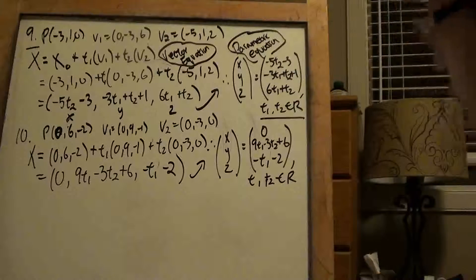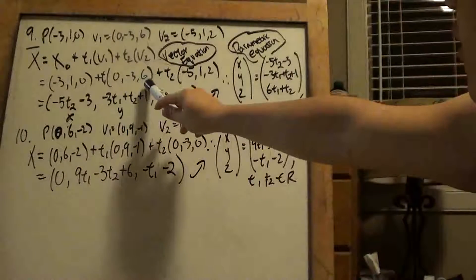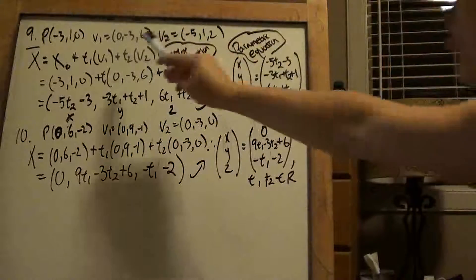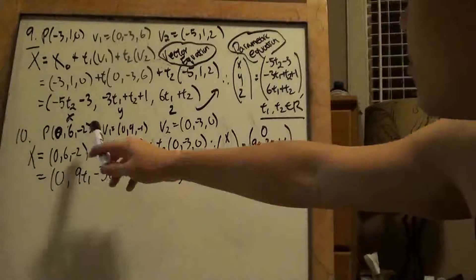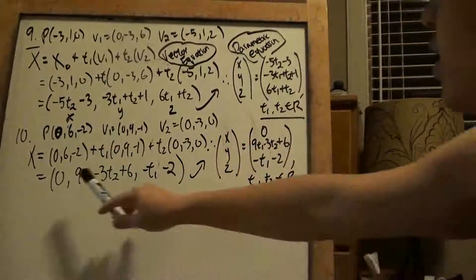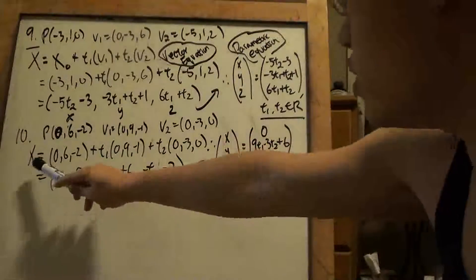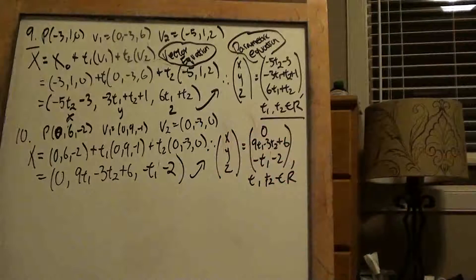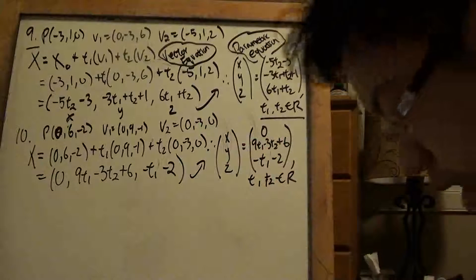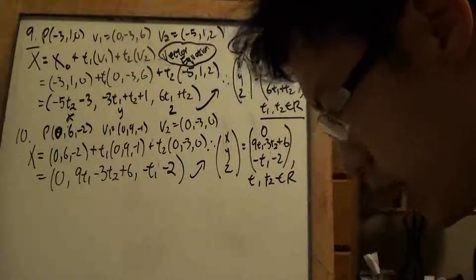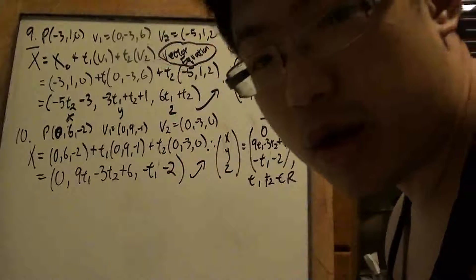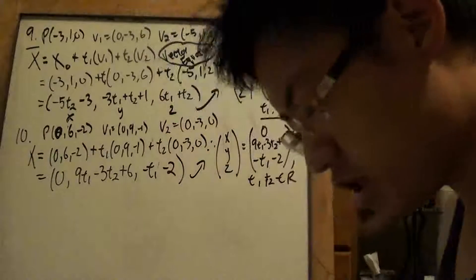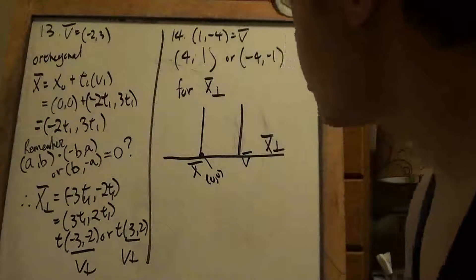Number 10 is the same thing — you do the same drill. This new vector is going to be parallel to both given vectors. Now for questions 13 and 14, we're doing a little different twist — rather than finding a vector that's parallel to the given vectors, we're going to be looking for one that is orthogonal.